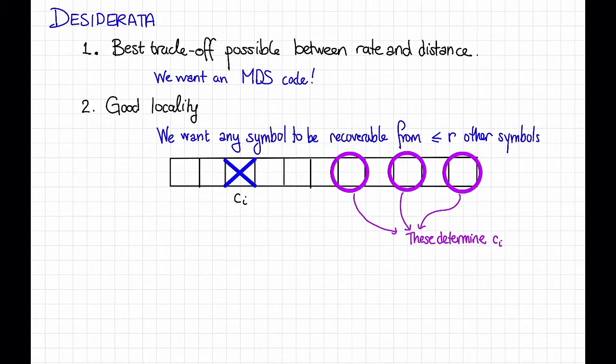The second thing that we might want is good locality in the sense described on the previous slide. Formally, let's say that we want to be able to recover any single symbol, so just one erasure, from at most, say, r other symbols. In this picture, we were able to recover this symbol from these three other symbols. Okay, so if we could achieve these two desiderata, that would be pretty cool. The problem, though, is that actually we cannot achieve both at once. This is impossible.